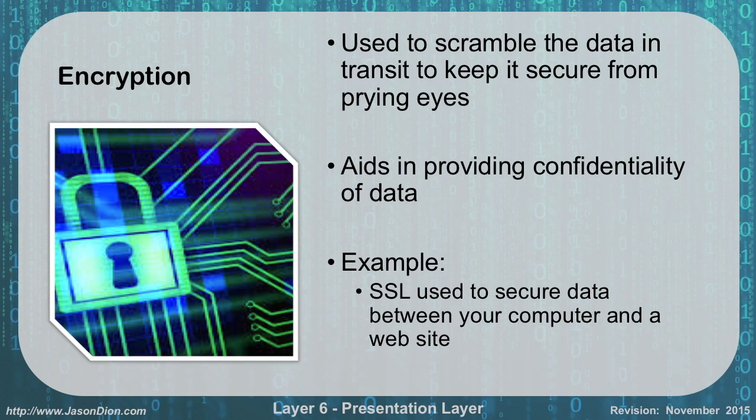This gives me confidentiality of my data to make sure that John, who's sitting on the network, can't see my bank account balances as they're transmitting over the wire. Encryption is very important for confidentiality, and encryption in transit is what we're talking about here with networking. It's a layer 6 function — the presentation layer.